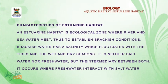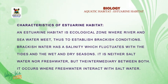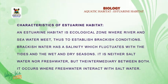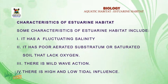Brackish water is neither salt water nor fresh water, but an intermediary between both. It occurs where fresh water interacts with salt water. So an estuarine habitat is a place or junction where sea water meets with fresh water. Now let's look at the characteristics of estuarine habitats.